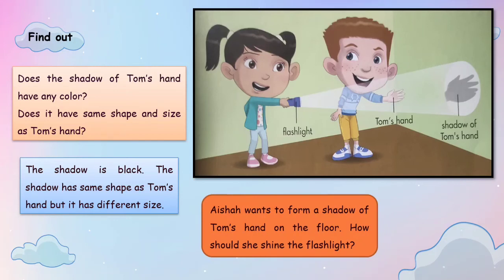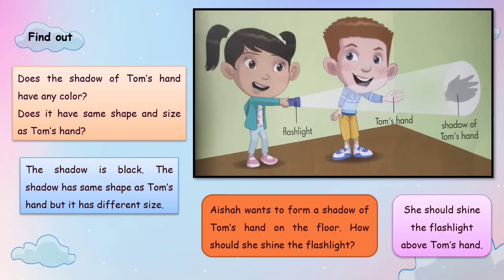Aisha wants to form a shadow of Tom's hand on the floor. How should she shine the flashlight? She should shine the flashlight above Tom's hand.